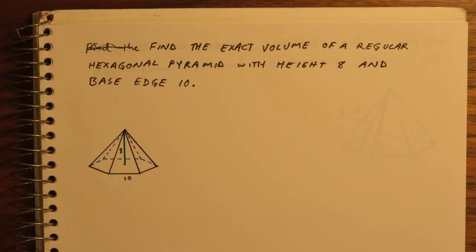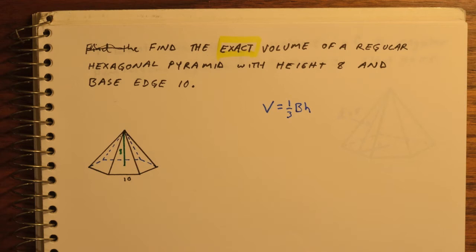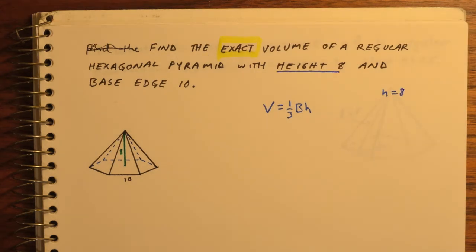Here's another example. We want to find the exact volume of a regular hexagonal pyramid, height of 8 and base edge of 10. We know we're dealing with the volume formula 1/3 area of the base times the height. We're given the height of the prism, so we already know it. We do need to find the area of the base.